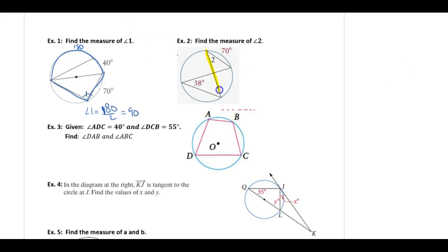For angle 2, it intercepts this arc here. I don't know the measure of that arc and can't find it with the given information. But this inscribed angle intercepts the same arc. If I do 38 times 2, this arc is 76 degrees. Since the angles intercept the same arcs, this is also 38 degrees.